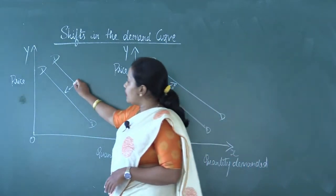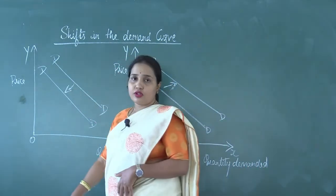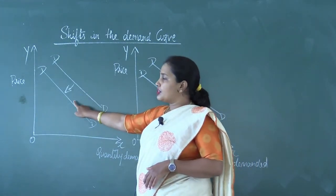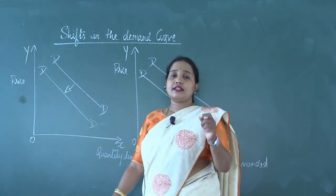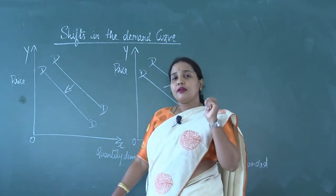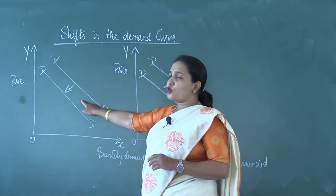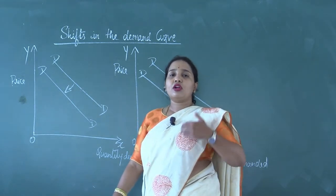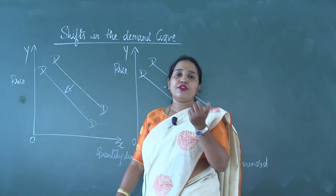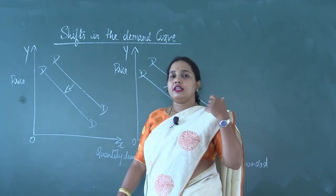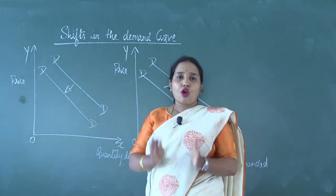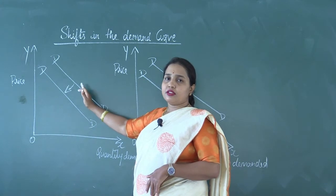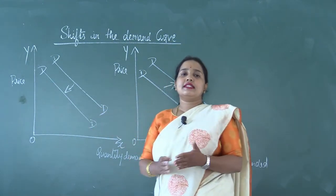On the other hand, for inferior goods, as there is an increase in income, the demand curve shifts leftward. Though there is an increase in the income of the consumer, he prefers to buy less of that commodity. People may not like to buy more of inferior goods whenever their income is more. Therefore, for normal goods the demand curve shifts rightward, and for inferior goods the demand curve shifts leftward.